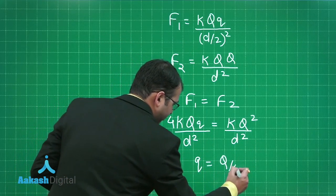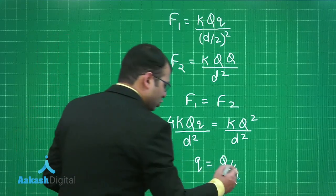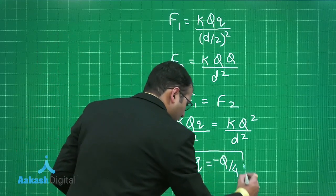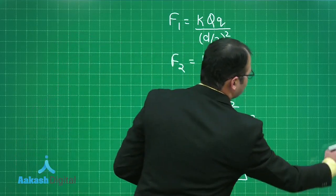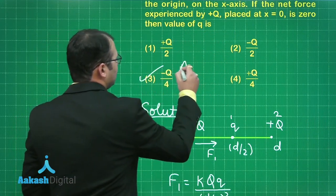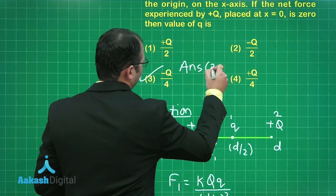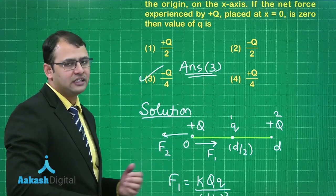Thus you will get q is equals to Q/4 in magnitude, and what should be the charge of that? It should be basically negative in order to make the force F₁ as attractive in nature. Let's see which is the best suited option. As per the available options, answer 3 is the best suited option for this question. Let's move ahead and see our next question.